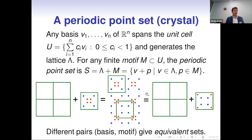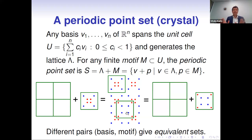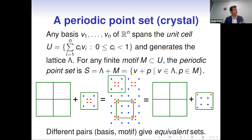This picture shows how the ambiguity of the traditional representation becomes even worse. With a fixed green square unit cell, different motifs can generate exactly the same periodic point set up to translation. Moreover, infinitely many different pairs of a basis and a motif give rise to equivalent sets that we consider equivalent.